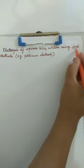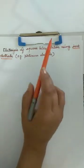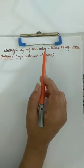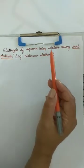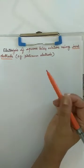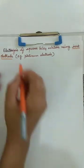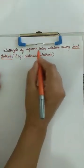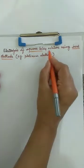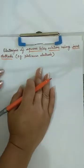First of all, what do you mean by inert electrode? Inert electrode means an electrode which does not react in the particular reaction or in the particular electrolytic cell. So, we are taking electrolysis of aqueous copper sulfate solution.